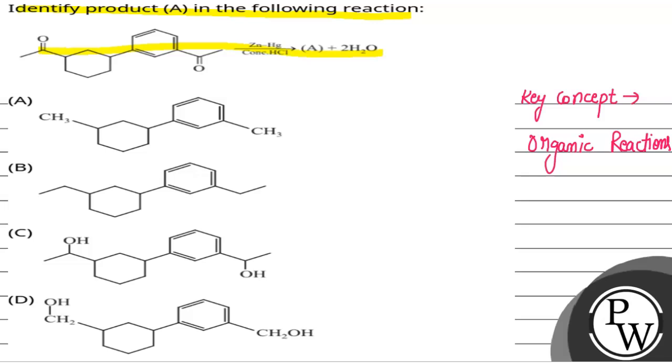Now, here we have a ketone group at both ends. We have zinc amalgam with mercury in the presence of concentrated HCl.